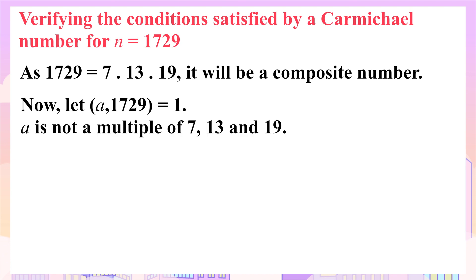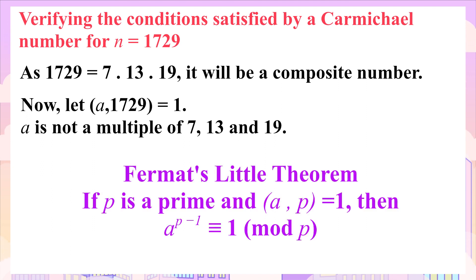Now, to check the second condition, let a and 1729 be relatively prime. Since from the factorization of 1729, we have the prime numbers 7, 13, and 19. So, a is not a multiple of 7, 13, and 19.